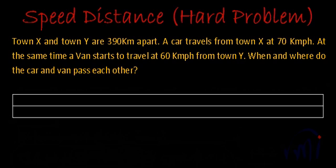Hi everyone. So now let's read out this statement and try to solve it. The statement says town X and town Y are 390 kilometers apart.